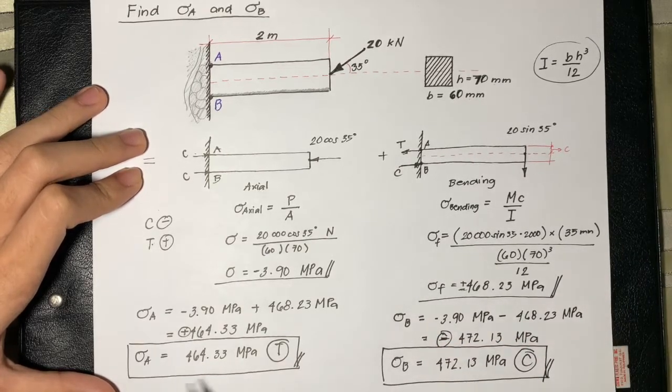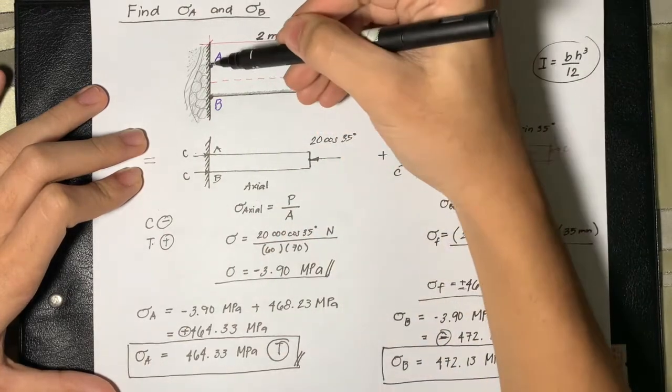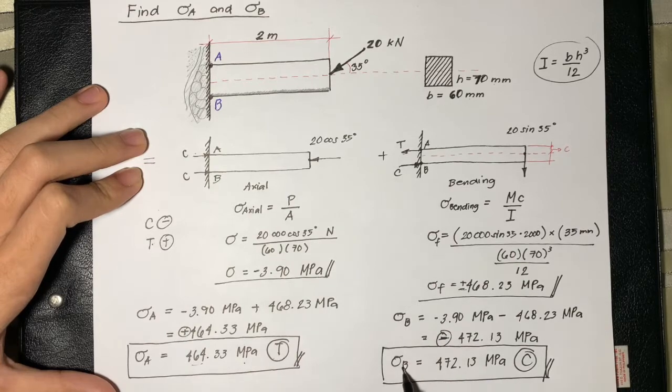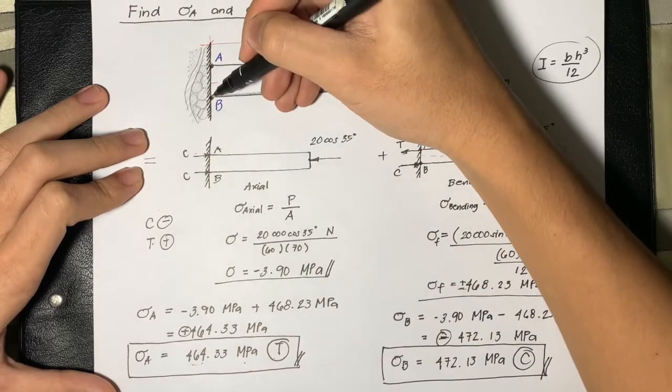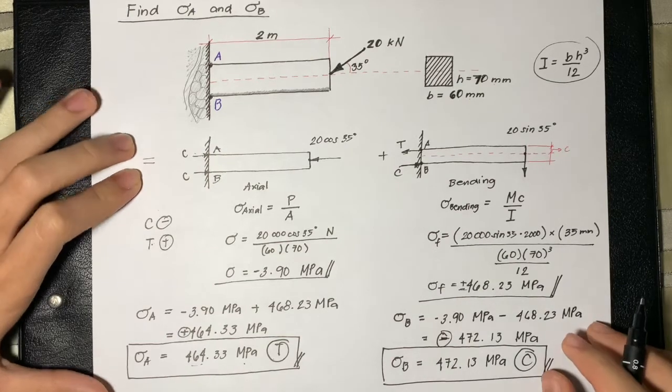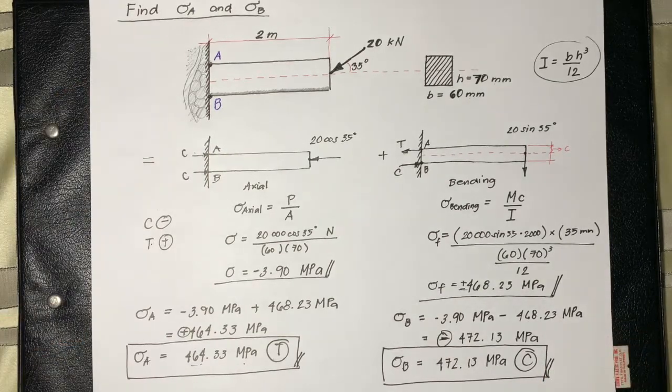As a recap for our answer, it is clear that at A, it experiences 464.33 MPa tensile stress while at B, it experiences 472.13 MPa compressive stress. That's all. Thank you guys for listening.